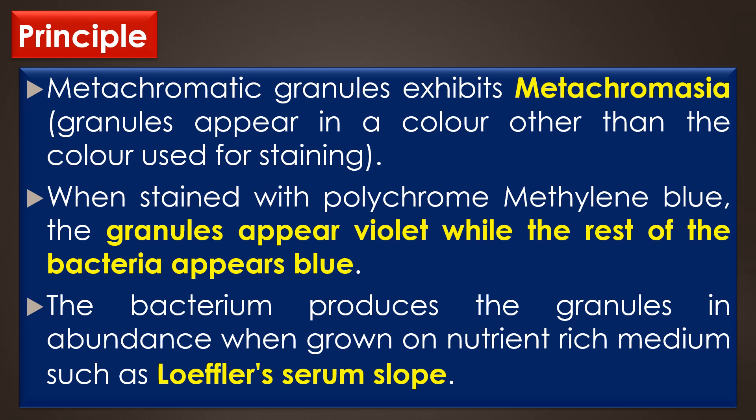For example, when stained with polychrome methylene blue, the granules appear violet while the rest of the bacteria appears blue. The bacteria produce the granules in abundance when grown on nutrient-rich mediums such as Loeffler's serum slope.